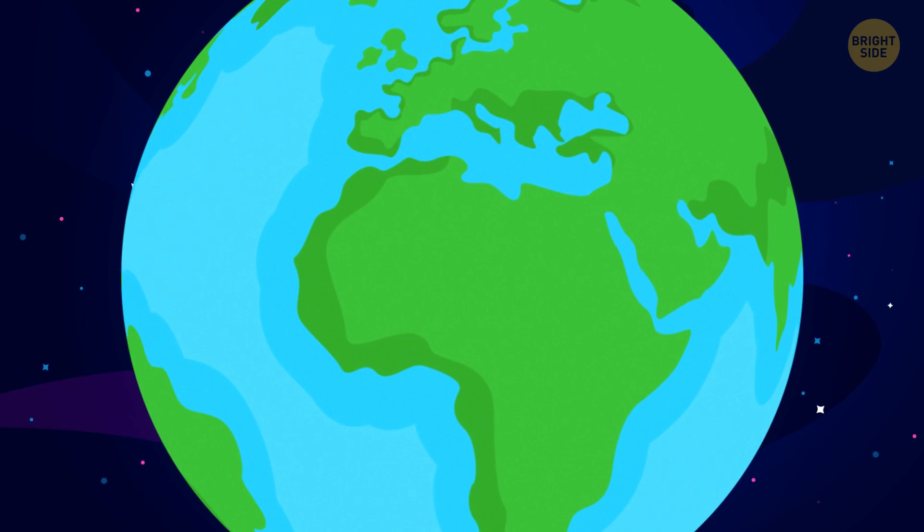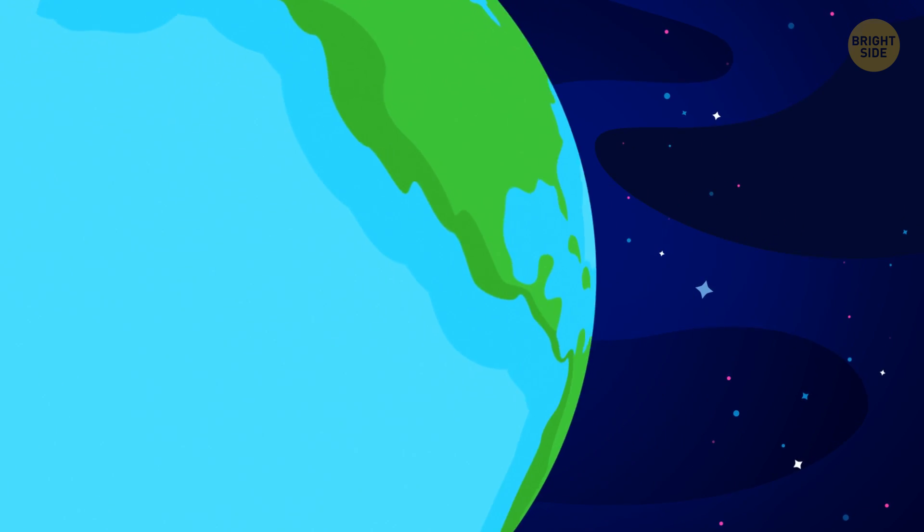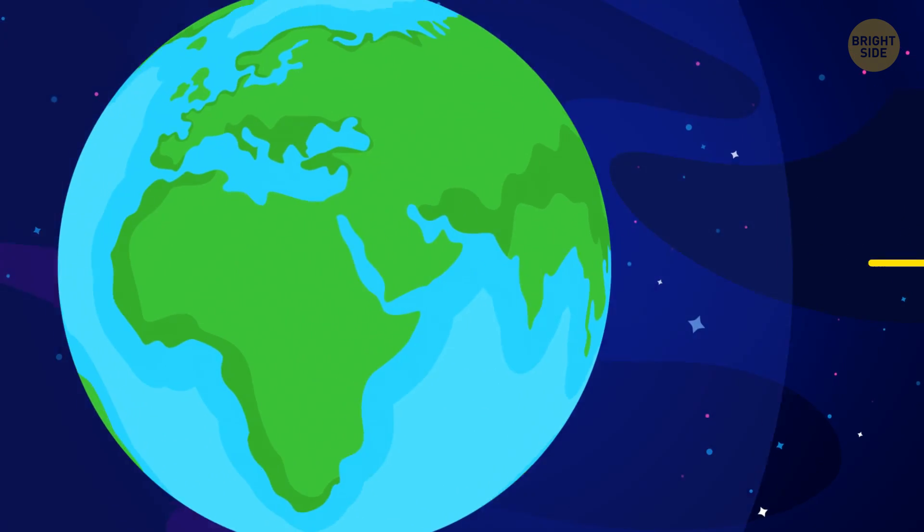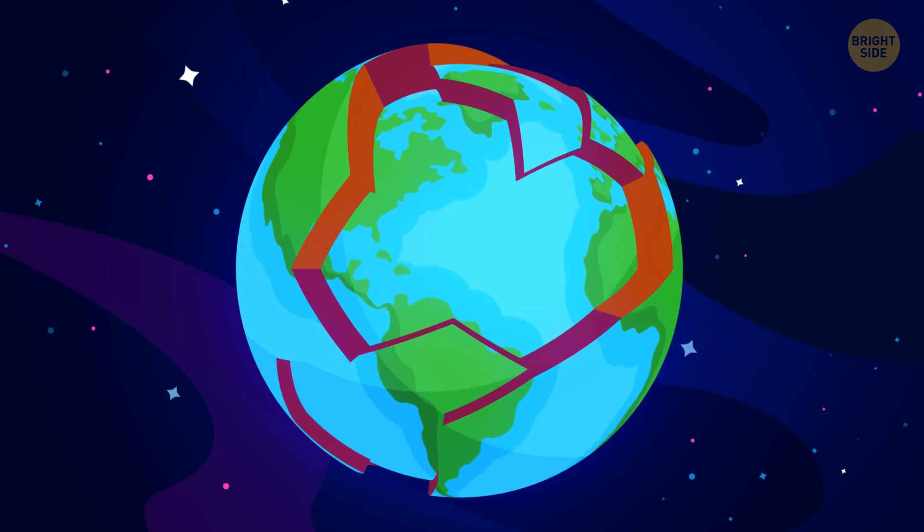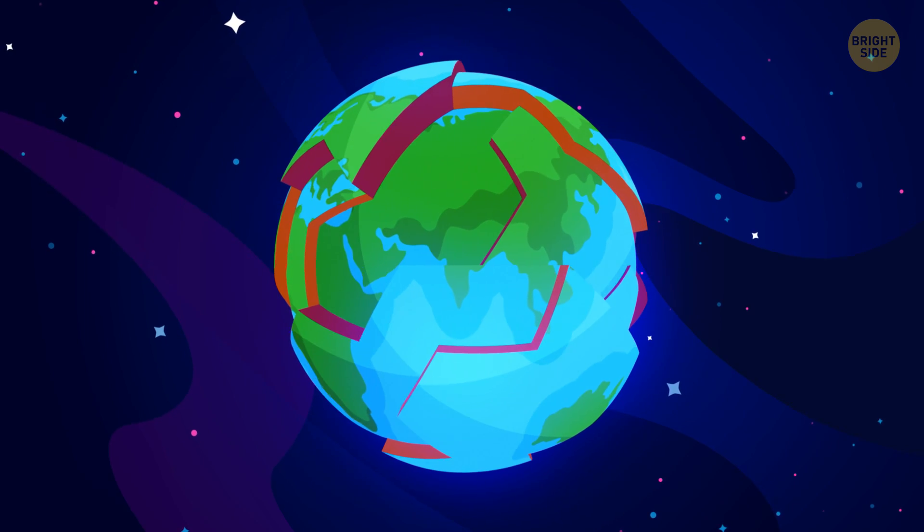On the other hand, the Earth might avoid such a dreadful outcome. According to some estimates, the surface might just drop 6-12 miles. But even this wouldn't save the inhabitants of the planet. However significant the collapse would be, the Earth's crust would buckle and crack.